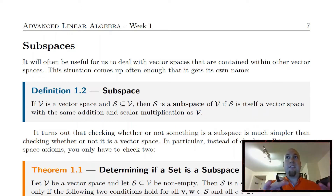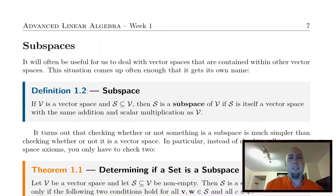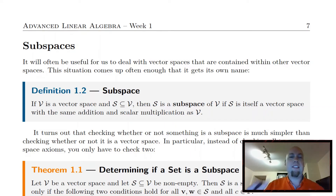Those things still are subspaces because they're vector spaces within vector spaces. Here the big vector space is R^n and the subspace is the line, plane, hyperplane, or whatever. But now we can talk about subspaces of arbitrary vector spaces as well — subspaces of the other types of spaces we saw in lecture one. Things like subspaces of the set of matrices or subspaces of the vector space of functions. We're just generalizing things we've already seen in regular linear algebra to the more general setting.